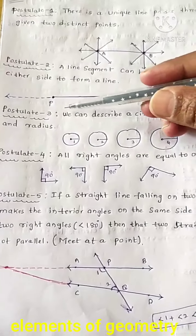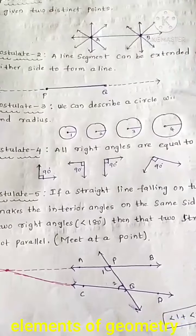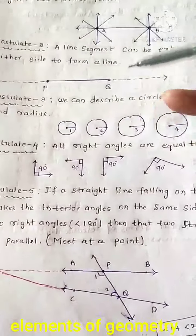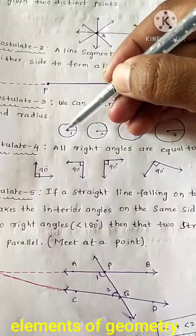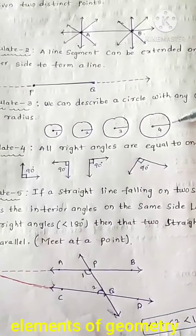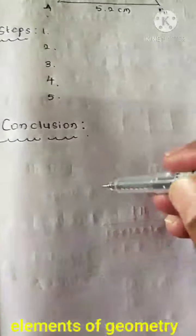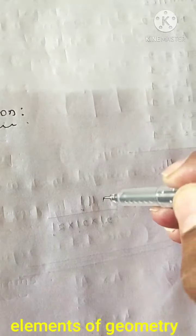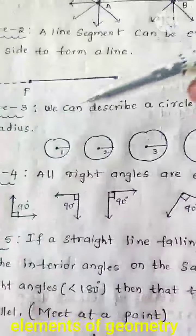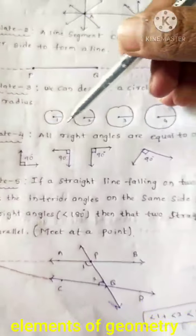Postulate 3: we can describe a circle with any center and any radius. Different radii give different circles — a circle with radius 1, another with radius 2, radius 3, radius 4. To describe a circle we require a center and a radius length, for example 10 units, to draw the circle.